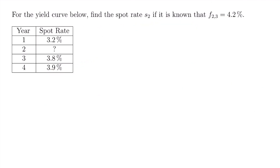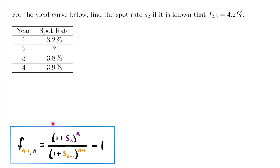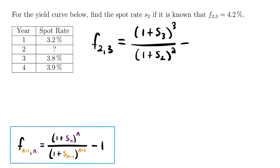Now let's take a look at our second example. For the yield curve below, find the spot rate s sub two, if it is known that the forward rate f sub 2,3 is equal to 4.2 percent. In this table we have spot rates for different terms, but we're missing the spot rate for the two-year term. Since we know the forward rate f sub 2,3 — the forward rate from year two to year three — we can set up the equation used to calculate that forward rate and solve for s sub two. We know that f sub 2,3 equals one plus s sub three cubed divided by one plus s sub two squared, minus one.